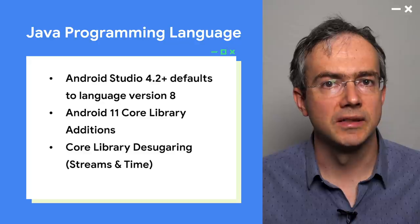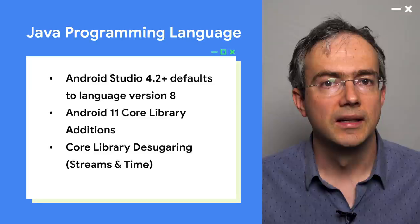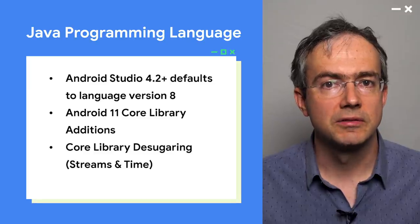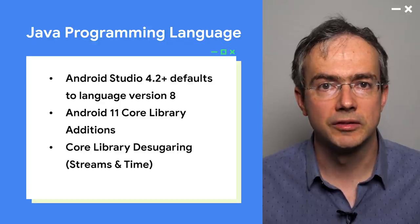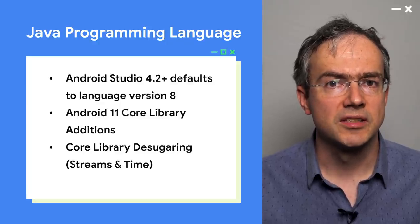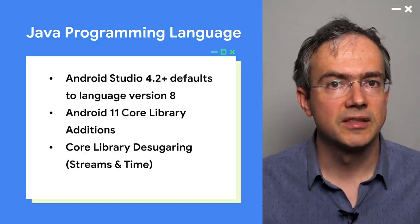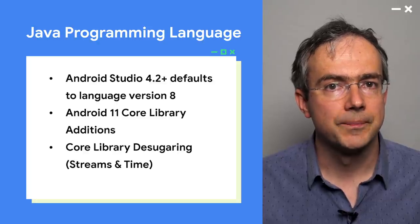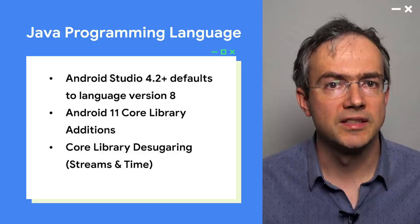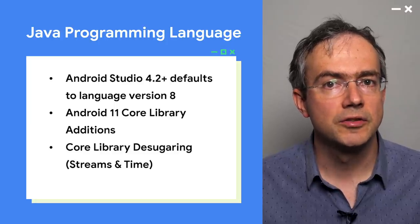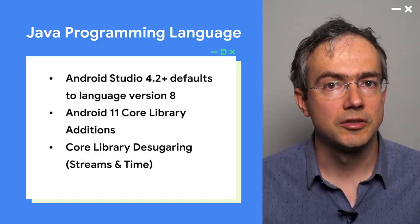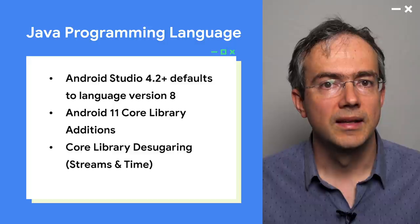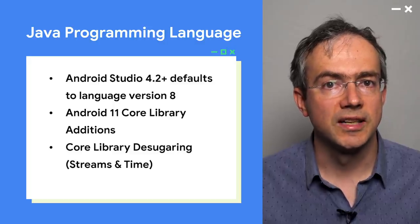We've been working on D8 desugaring to enable using newer Java language features in existing versions of Android. This support has been stable in the last few releases, and in Android Studio 4.2, we will turn desugaring of Java 8 language features on by default. Android 11 also adds additional APIs such as of-methods on collections. To avoid having you wait for these new APIs to land on most devices, we introduced the ability to desugar core Java language libraries such as Streams and Time, starting in Android Studio 4.0.